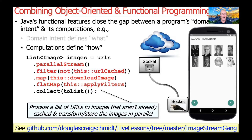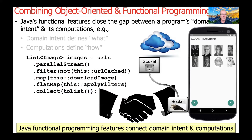The computations define the how — that's how we actually realize the domain intent or satisfy the requirements. Here's a little code snippet from the ImageStreamGang example on my GitHub repository, where we take a list of URLs, convert it into a parallel stream, filter out anything already cached, download the non-cached images, apply various filters to transform them, and collect the results into a list stored locally on the device. This illustrates how computations in a declarative, functional programming model really mirror the domain intent — the what — in a way that's fairly easy to read once you understand the syntax and semantics of Java functional programming.